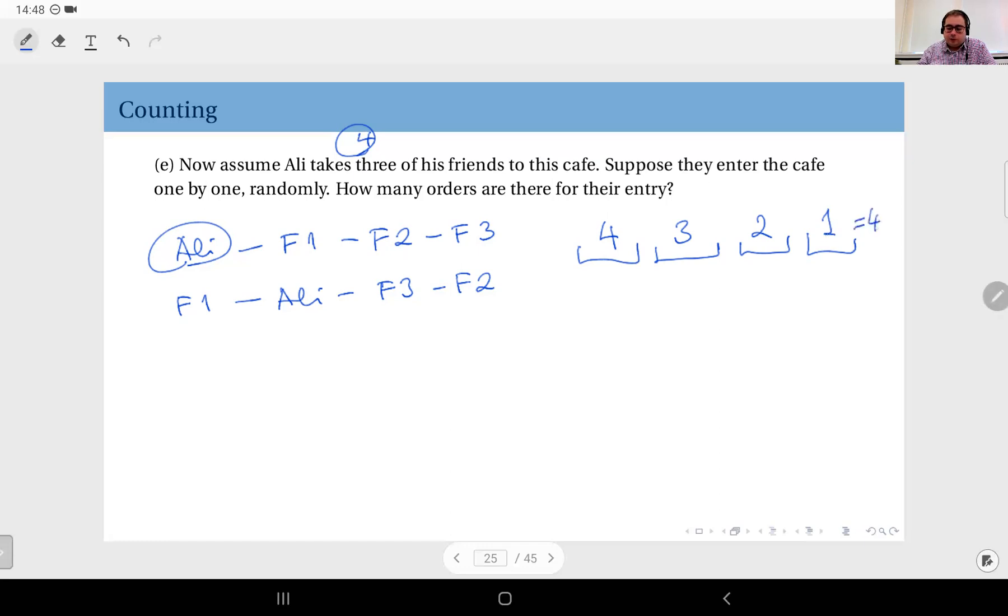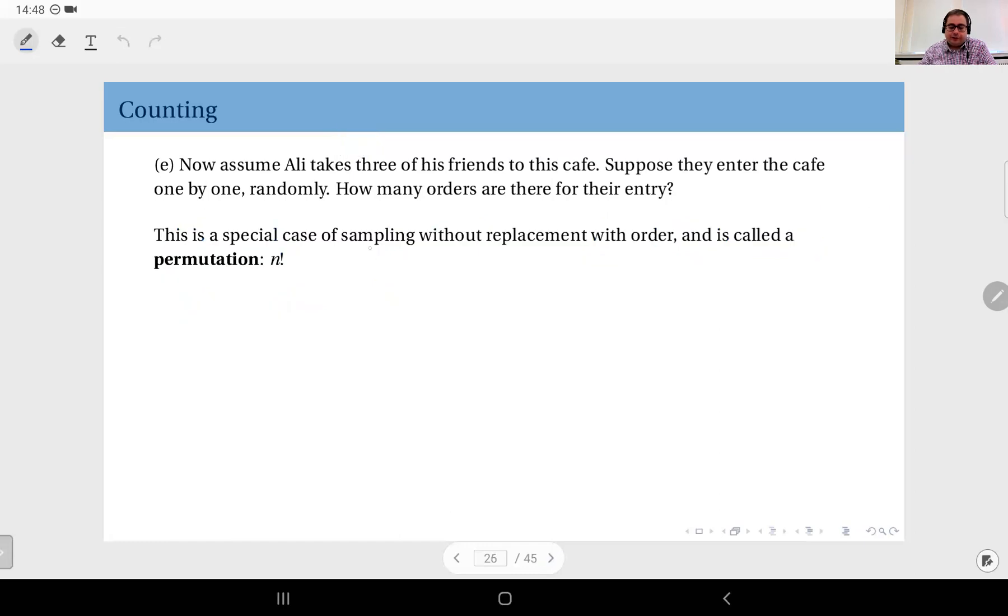And after that two, and finally one is going to stay left behind and he is going to enter. So this gives you 4 factorial. So this is a special case of sampling without replacement with order.